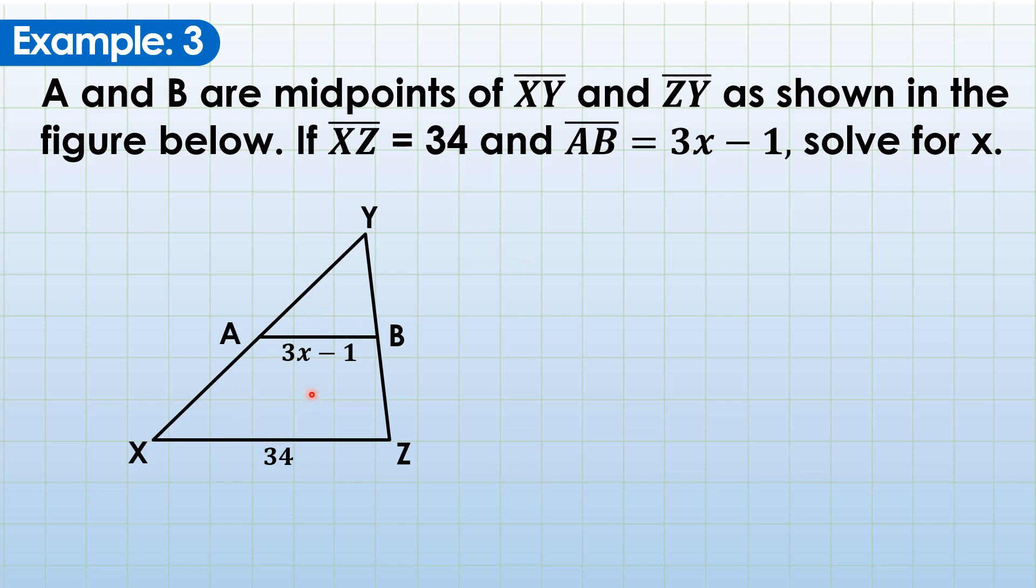Did you notice that? If the question is looking for the length of AB, this question is as easy as the first example. You're just going to get the half of 34, which is 17. But now, the question is looking for the value of x. This is one of the reasons why, as much as possible, we present our solution in every problem that we solve.